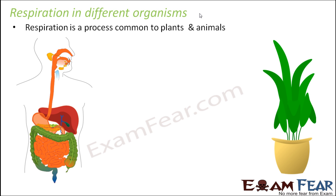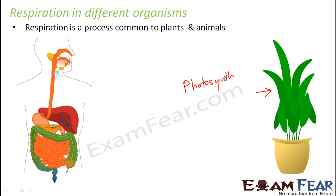Plants also undergo a similar process — process-wise, it remains the same in plants as well. In photosynthesis, carbon dioxide is utilized and oxygen is given out. That oxygen is then utilized by the cells of the plant for respiration — that's how cellular respiration takes place in plants. Plants do not have nostrils and lungs, so there is no separate process like breathing. The oxidation of food part of respiration still holds true for plants. In plants, photosynthesis and respiration are two reverse processes: in photosynthesis, oxygen is produced, and in respiration, that same oxygen is utilized for oxidation of food.